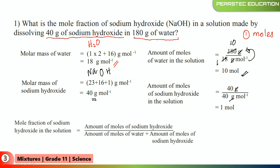The problem is almost solved. The mole fraction of sodium hydroxide in the solution: moles of sodium hydroxide is 1, moles of water is 10, and moles of sodium hydroxide is 1 again. So the equation is 1 over (10 + 1), which equals 1 over 11. That's how the mole fraction is expressed. For any such question, first find the molar mass, then use the given grams to find moles, then apply the mole fraction equation.